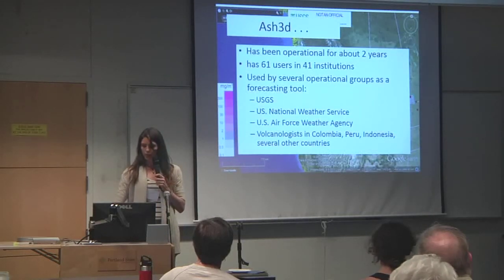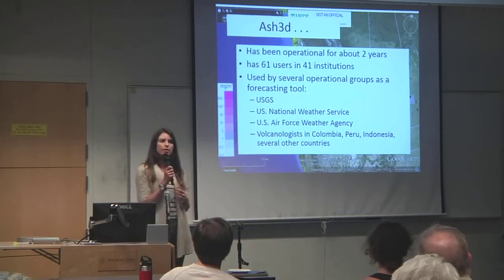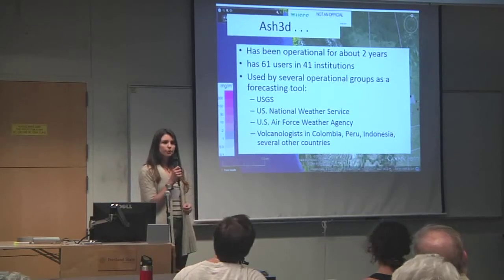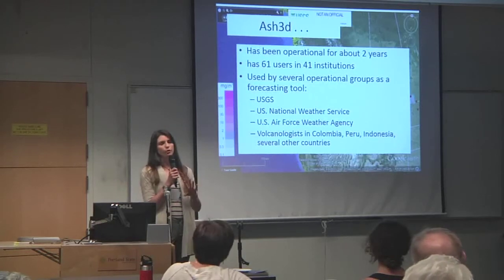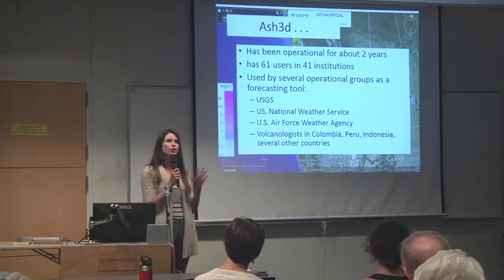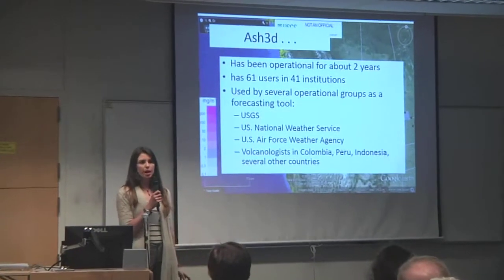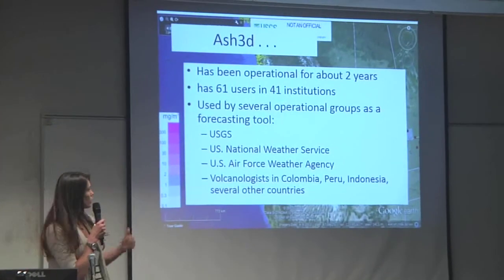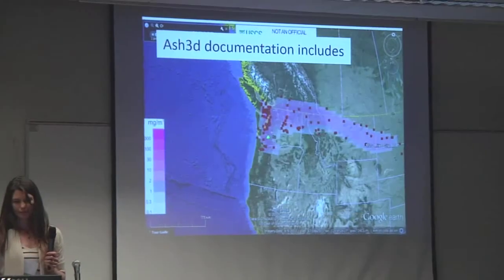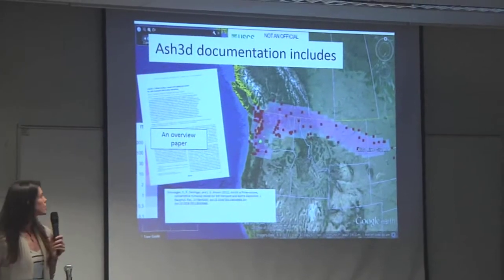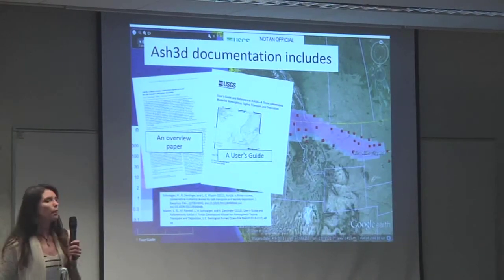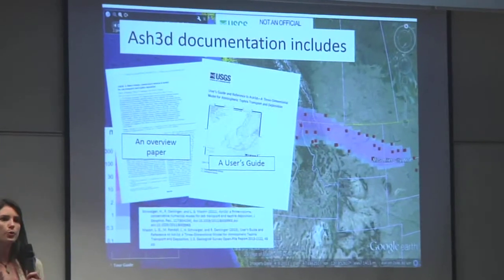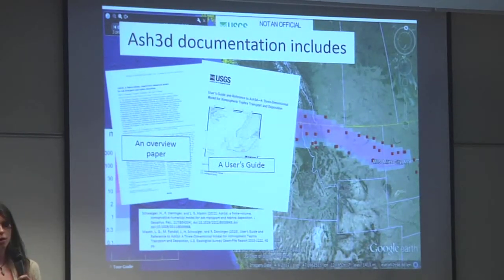This is a relatively new code. It's been in operation for about two years. 41 different groups are using it either for forecasting operationally or just for looking at the dynamics of volcanic plumes. There's documentation in the form of a published paper, but also a user's guide that goes through the basics, and these are available online.